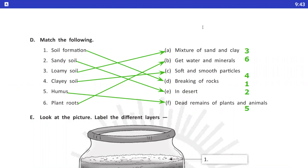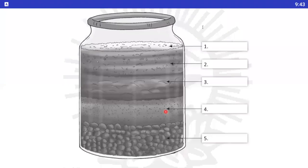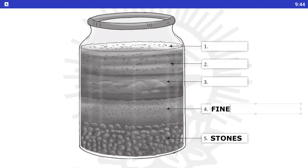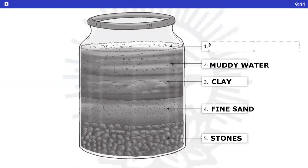Now, next question is, look at the picture, label the different layers. Isme ek diagram diya gaya hai, jiski labeling humko karne hai. Isme ek sab se niche jo hoethe hai, stones. Phir fine sand hoethe hai. Then clay, muddy water, humus. Sab se upar hoethe hai, humus. Himne yadhi numbering kari, iski layer bata hai, toh sab se upar hoega humus. Then muddy water, uske niche clay, phir fine sand, and phir stones.